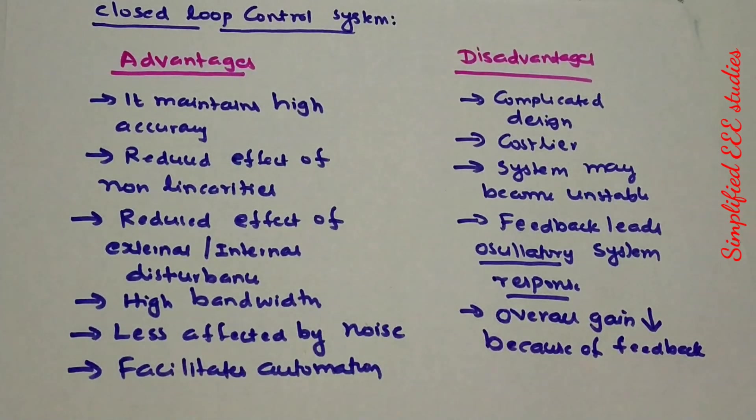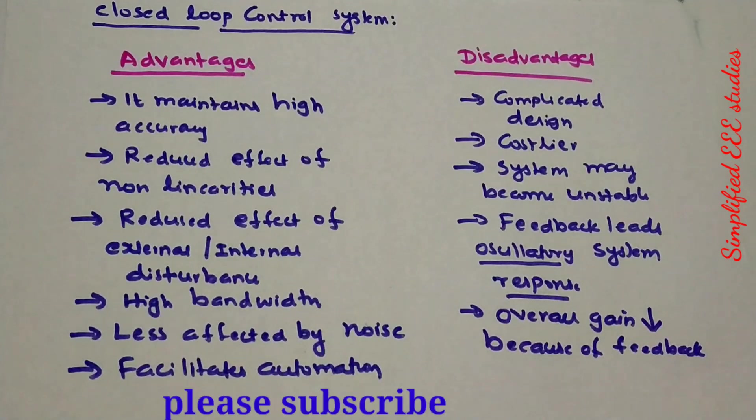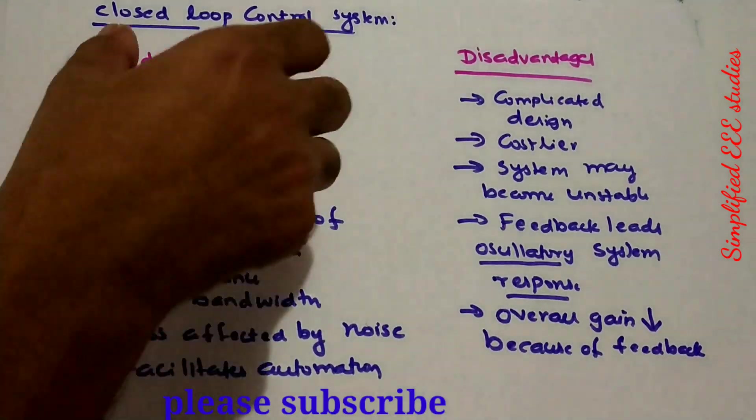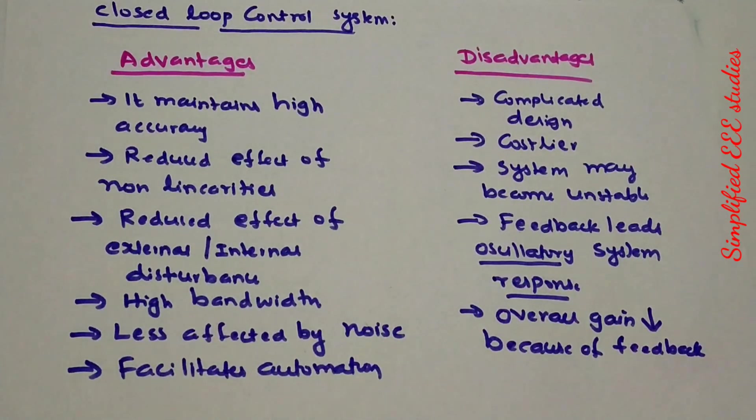These are the few drawbacks of closed loop control system. Every system will have pros and cons. So I could list out the advantages and disadvantages of closed loop control system. Thanks for watching this video. Please share and don't forget to subscribe. Thanks again.